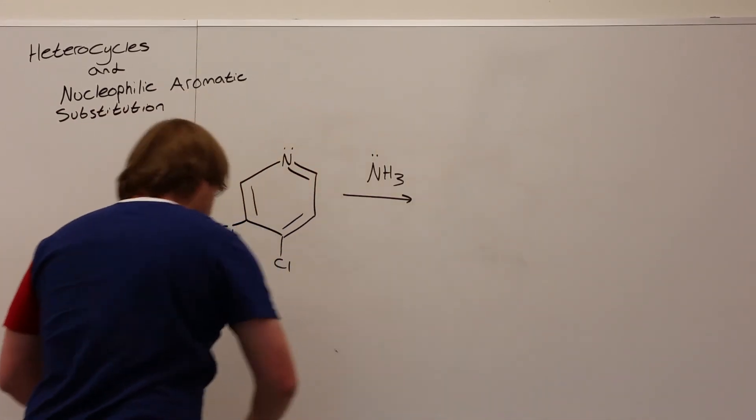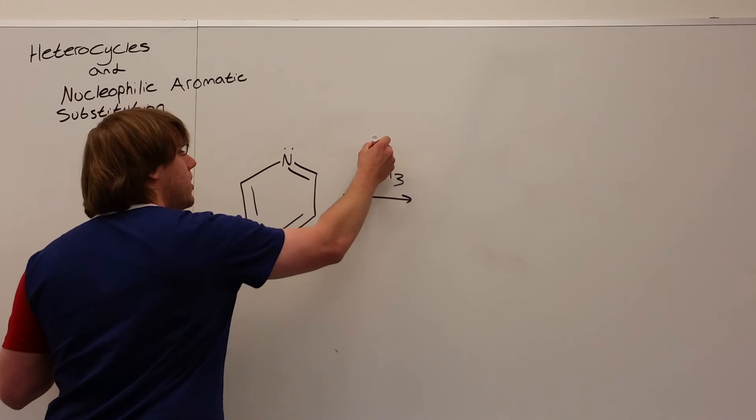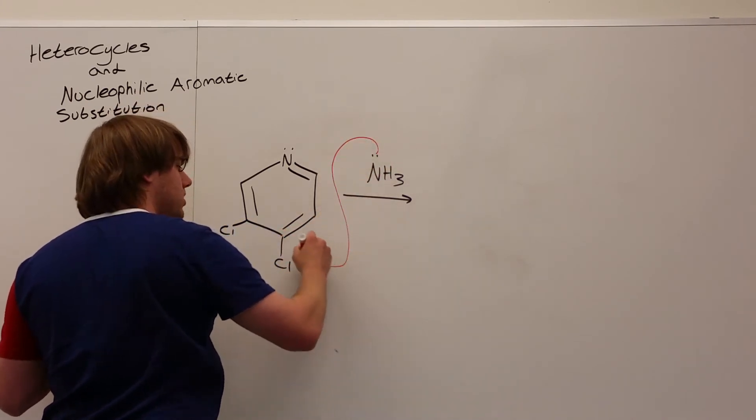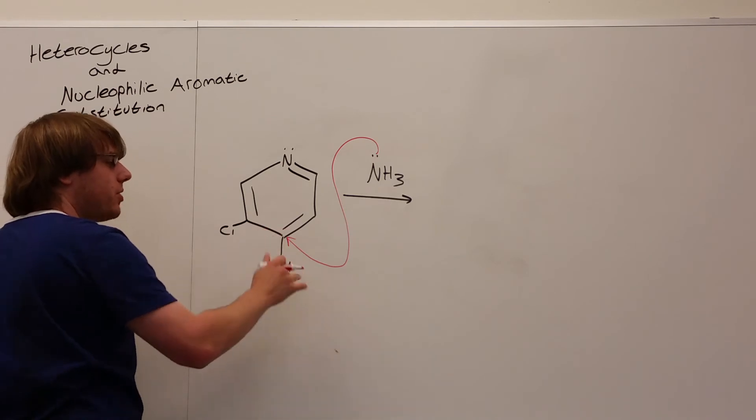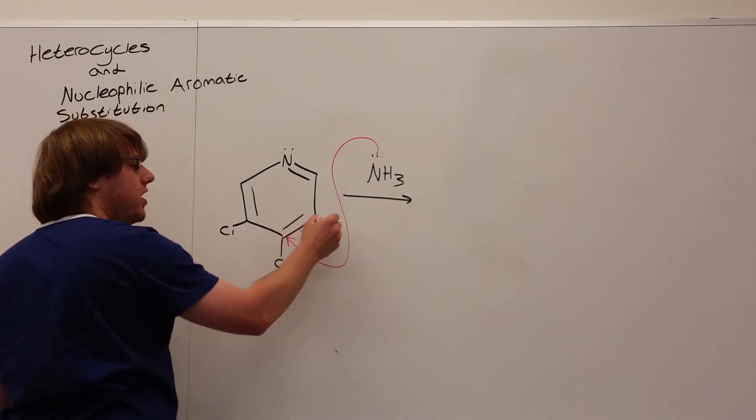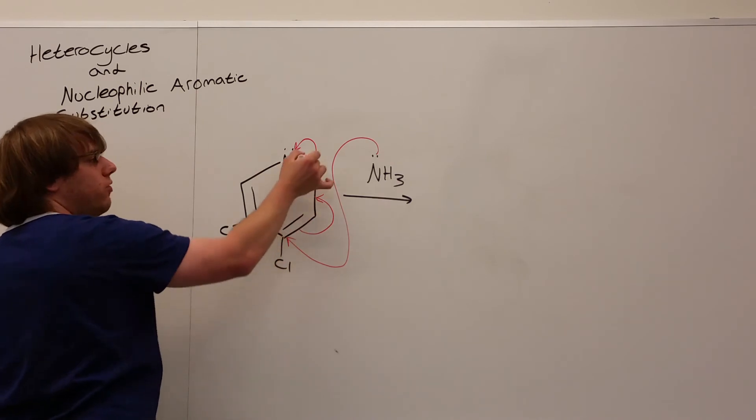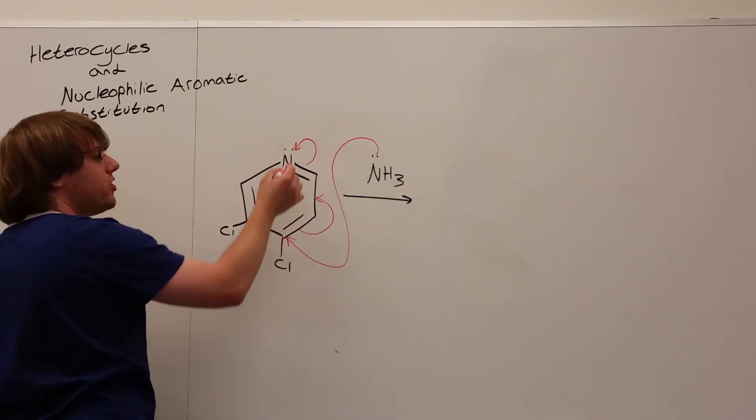So the first step is what we saw before. The nitrogen's lone pairs will come in, attack the carbon with the leaving group, but rather than the leaving group popping off, the double bond has to resonate up and into the nitrogen. We could resonate further around the ring, but that won't help us.